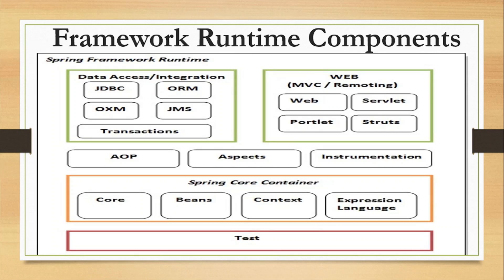The components of the Spring framework runtime include the Spring core container, which contains the core component, beans, context, and expression language. On top of that, we have aspect-oriented programming, known as AOP, along with aspects and instrumentation. To access the database, we have JDBC, ORM, JMS, and transactions components. For web-related applications, we have MVC, web servlet, portlet, and Struts as components of the Spring framework runtime.